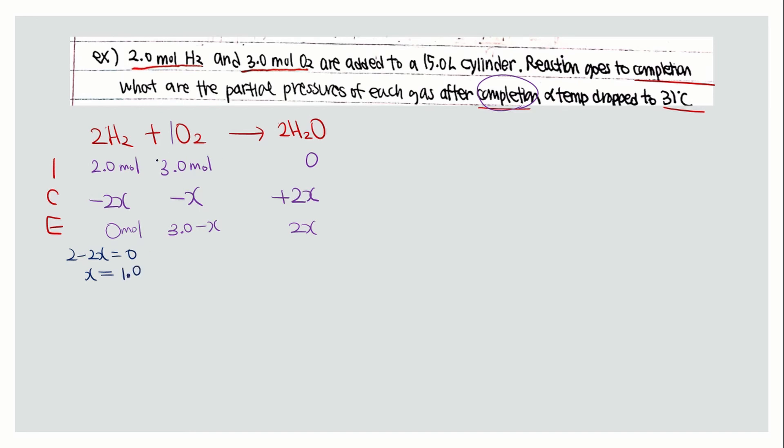Therefore, at equilibrium, the number of moles for oxygen will be 3 minus 1.0, which is 2.0 moles. For water, it will be 2.0 moles as well.